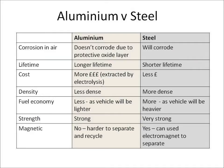Let's look at the comparison between aluminium and steel in terms of making a car body. In terms of corrosion, aluminium doesn't corrode because it's got a protective oxide layer, but steel will corrode.